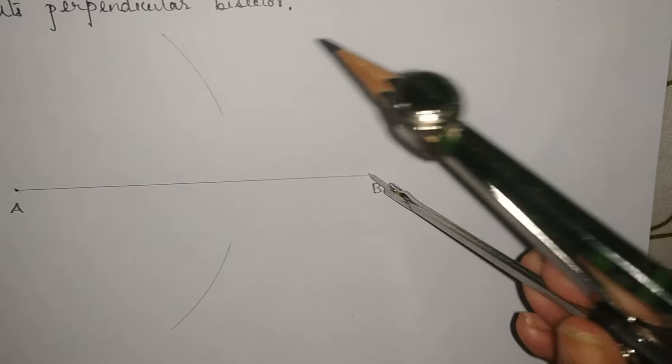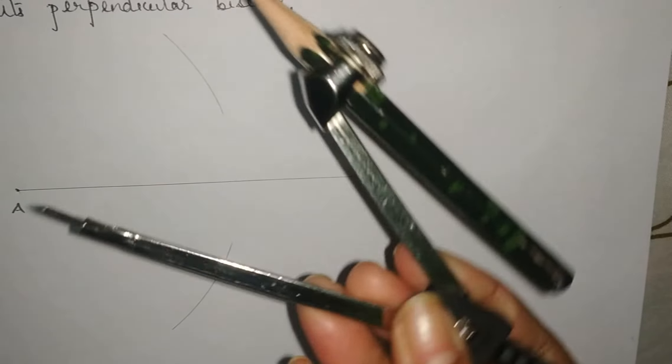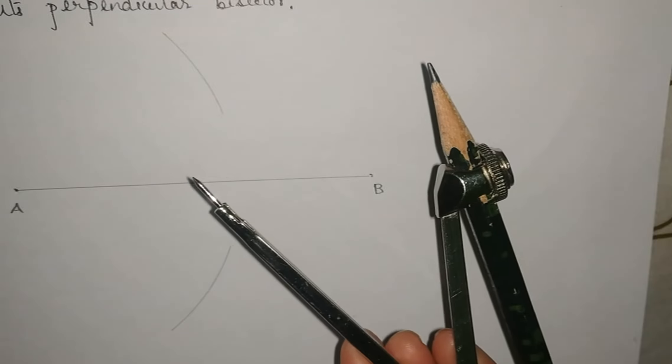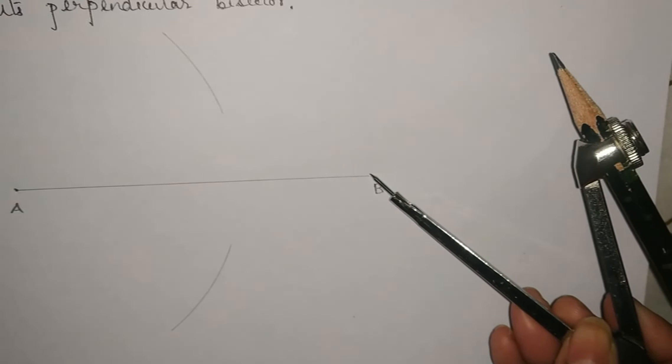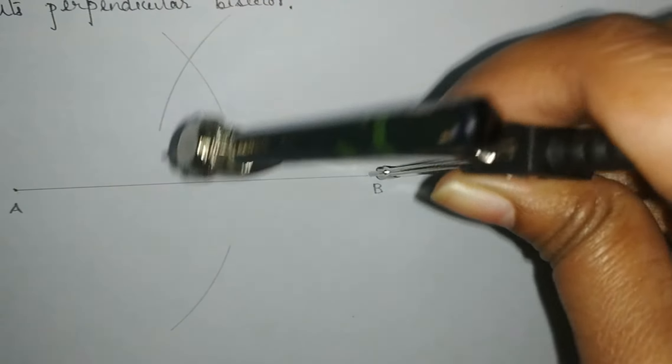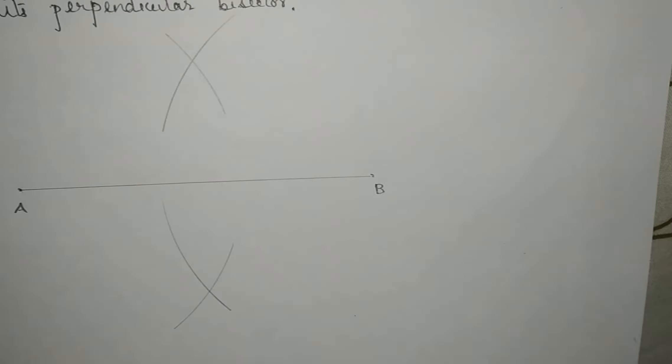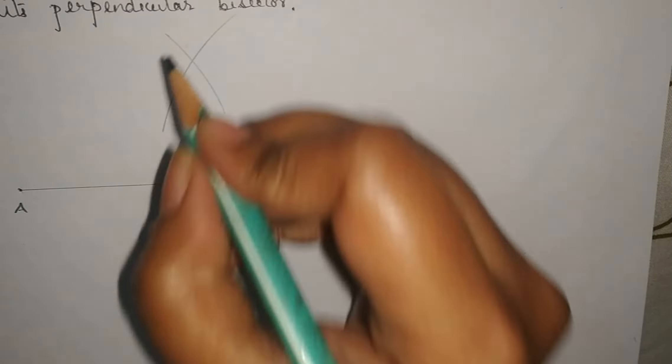We have opened the compass like this only, we have not changed the measurement. At point B again we will draw an arc at upper side and lower side. This is the point of intersection.